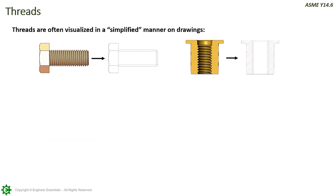Threads are most often visualized in a simplified manner on drawings. It is important to note that the actual 3D models are also almost always shown in a simplified state. This is for two reasons: so that people don't try to measure the threads on a drawing, and because 3D threads, which are made up of helical surfaces and features, are extremely memory consuming on a computer, meaning it would bog down the machine and cause performance issues.